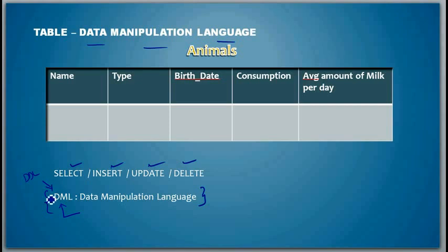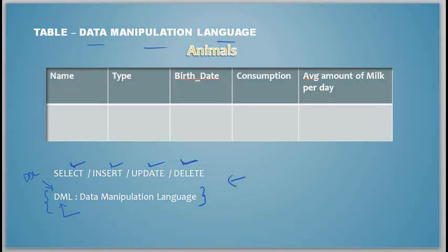DML consists of select—to read from a table, insert—to insert data into a table, update—to update existing data in a table, and delete—to delete data from the table. So this forms data manipulation language. Thanks for watching this video. If you have any question please feel free to leave a comment. Thanks.